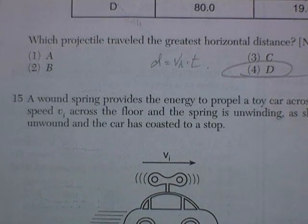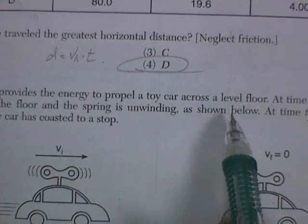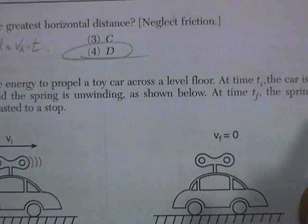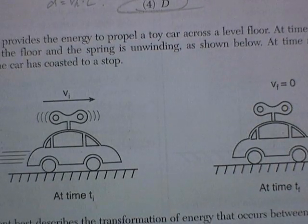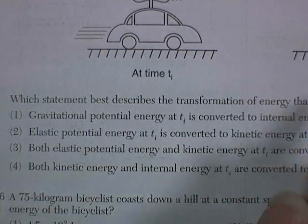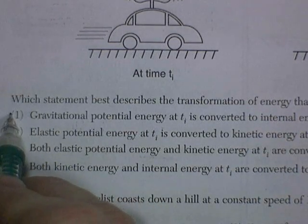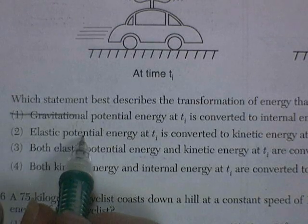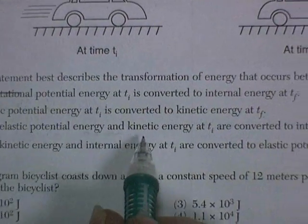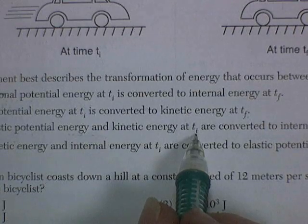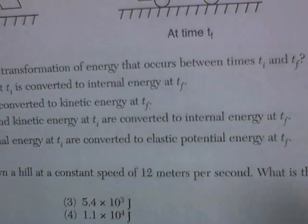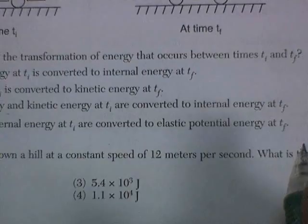Question 15. A wound spring provides energy to propel the car across level ground. At time T initial, moving at velocity V across the floor, the spring is unwinding. At time T final, the spring is fully unwound and the car is coasted to a stop. Which statement best describes the transformation of energy that occurs? Gravitational potential, I'm going to cross this out. Elastic potential energy is converted to kinetic energy. I like that. Both elastic energy and kinetic energy at time initial. Well, it didn't have any kinetic energy at time initial.